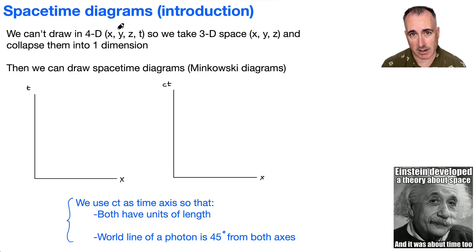Space because of x, y, z, and then the time part. So instead, what we do is we take the three-dimensional part, the x, y, z, and we collapse them into just one dimension. So we just call that just x. And then we can draw these space-time diagrams to show what happens to stuff.